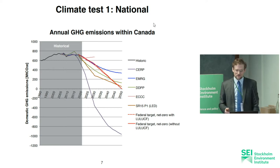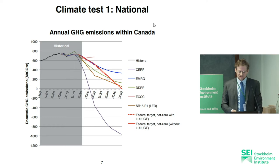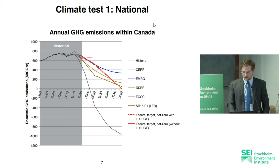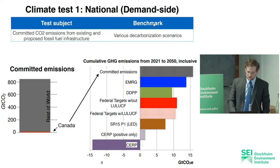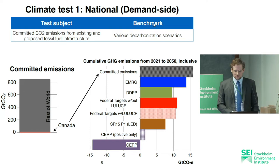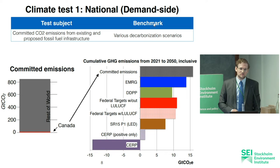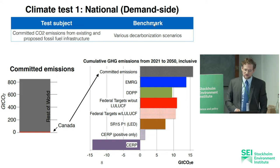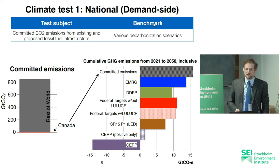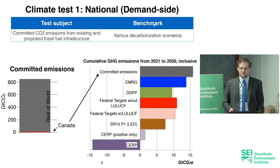Then there is SR 1.5, still using the LED — Low Energy Demand — model. Then the federal targets and some scenarios I've extrapolated. Here we have Canada's committed emissions, and you can see that they already exceed all the cumulative emissions from these various scenarios, which means that even if we didn't build new infrastructure in Canada, we'd have to decommission it early in order to meet any of these scenarios.